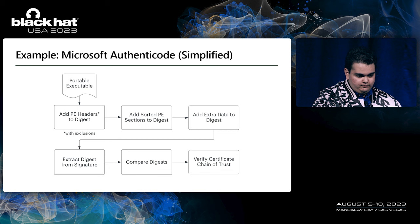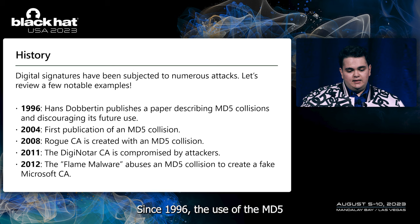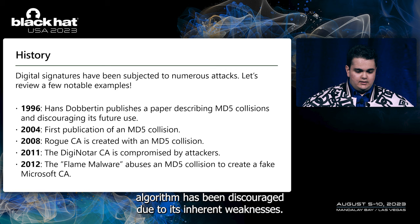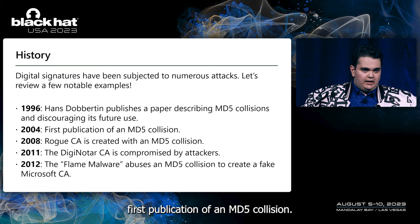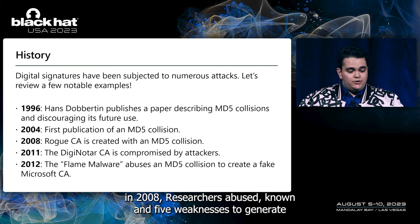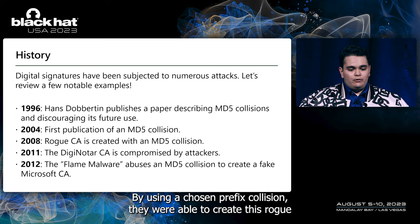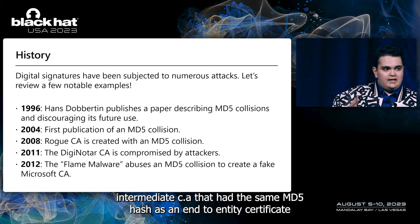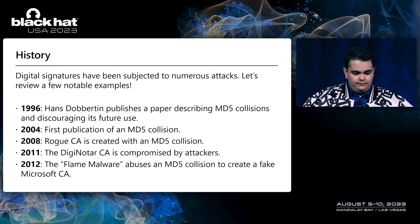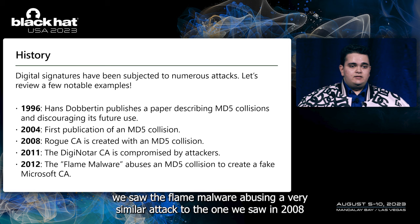So let's talk about how one can go about attacking digital signatures. A quick history recap: since 1996, the use of the MD5 algorithm has been discouraged due to its inherent weaknesses. In 2004, we saw the first publication of an MD5 collision — researchers were able to generate two distinct files that resulted in the same MD5 hash. In 2008, researchers abused known MD5 weaknesses to generate a malicious intermediate certificate authority with a valid chain of trust. By using a chosen prefix collision, they were able to create a rogue intermediate CA with the same MD5 hash as an end entity certificate issued by a legitimate certificate authority. In 2011, we saw the breach that allowed attackers to generate a trusted Microsoft certificate authority.